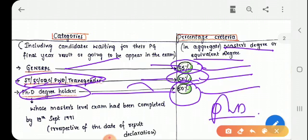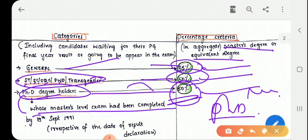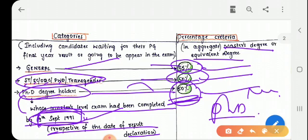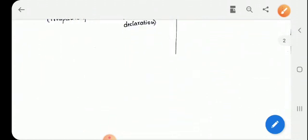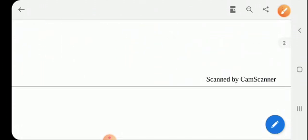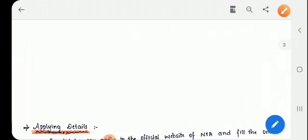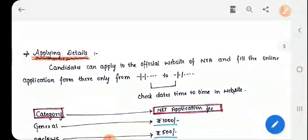Below 50 it is not allowed for this category and below 55 it is not allowed to write the examination for general category. For PhD degree holder, in your PhD degree you should have 50 percent, or if you are possessing the PhD degree then in your master's degree you should have 50 percent as aggregate. If you are doing PhD, your master's level exam should be completed by 19th September 1991. For them the rule is applicable irrespective of the date of result declared but you should have completed your examination before this date.